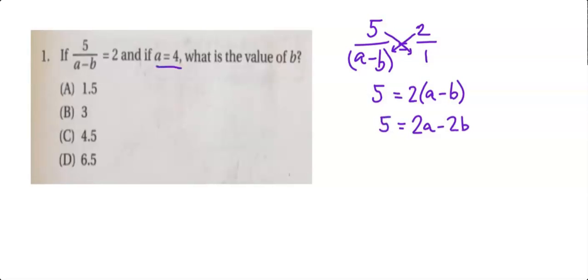And now they already tell us that a equals 4 so we can put in a 4 for a. This becomes 5 equals 8 minus 2b. Subtract 8 from both sides so I end up with negative 3 equals negative 2b. Divide by negative 2.